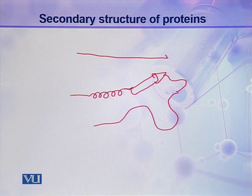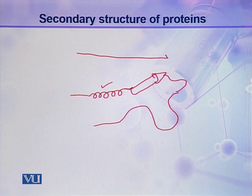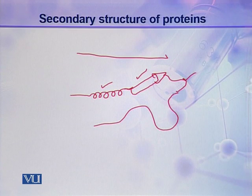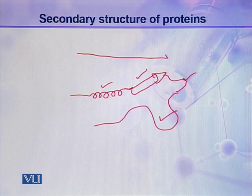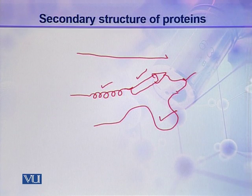Secondary structures include a number of structures like alpha helix, beta sheets, and turns — which include beta turns and gamma turns. It also contains loops like omega loops, as well as random coils. There are a number of secondary structures which are repeated in the structure of proteins, and all these are local conformational changes in the structure of a polypeptide chain.